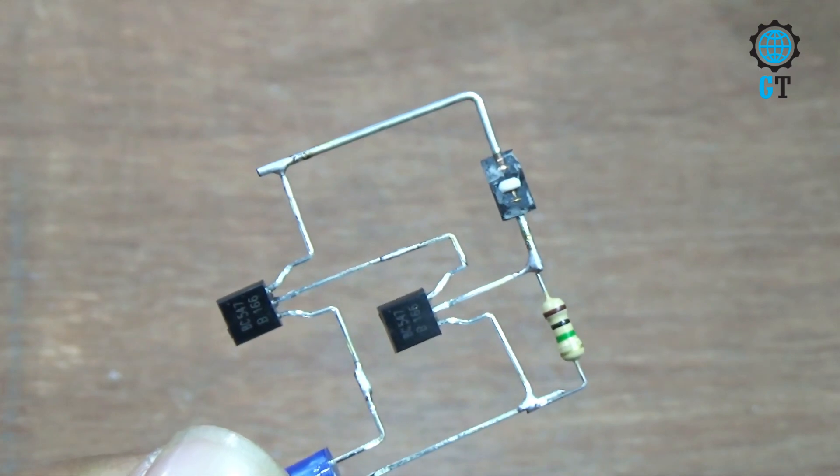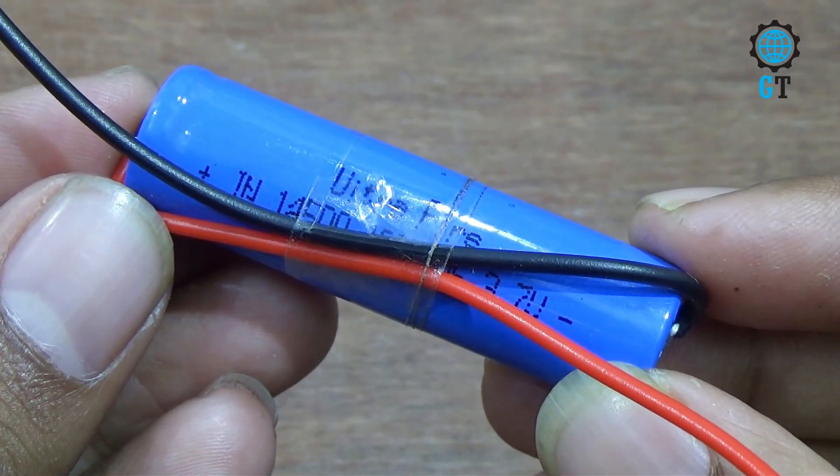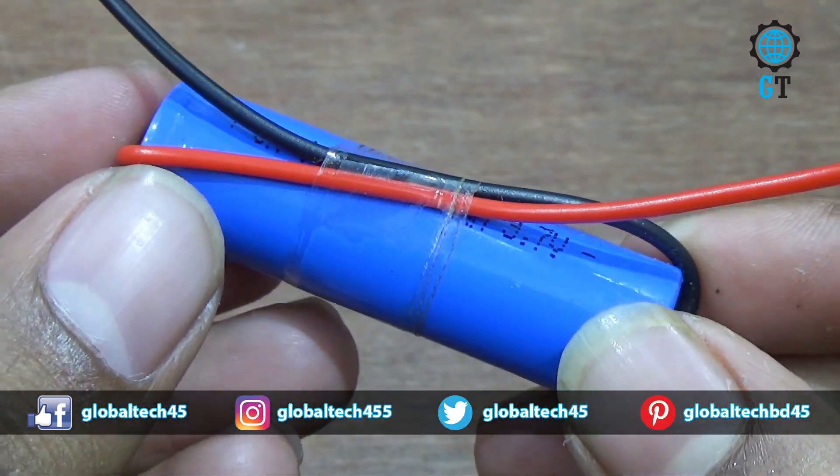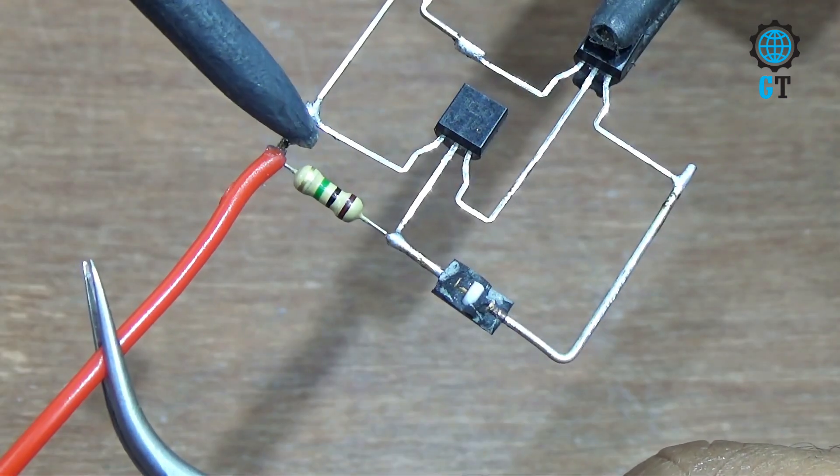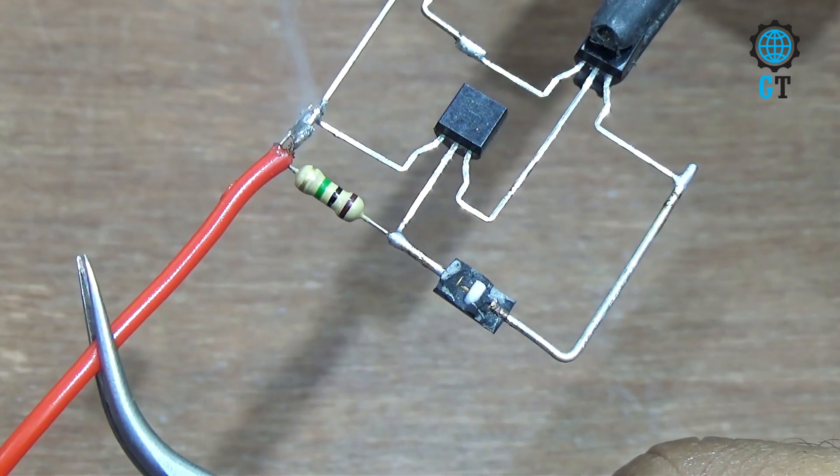Carefully watch the connection of the circuit. For power source we are using a 3.7V battery. Its red cable positive and black cable negative. Now we connect battery positive cable. We connect this cable where LED positive leg is connected.